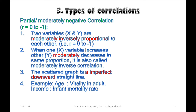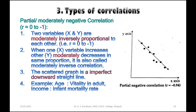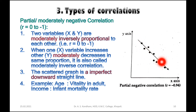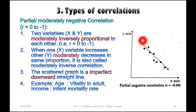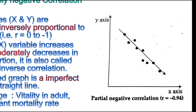There will be malnutrition when income is low — this is an example of partial or moderately negative correlation. In the scatter graph, you can see values of x and y variables plotted on their respective axes. The dots are not in a perfect line — some dots are out of line — and the downward arrow indicates the negative relationship between these two variables. The r value here is minus 0.94.